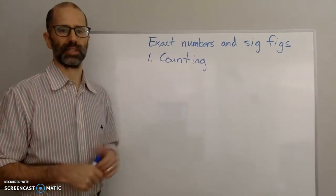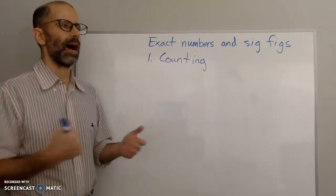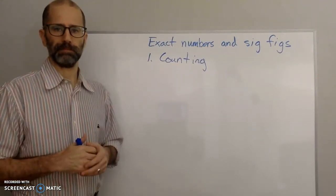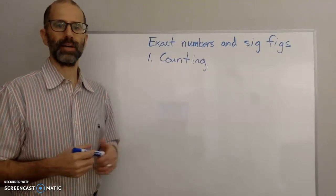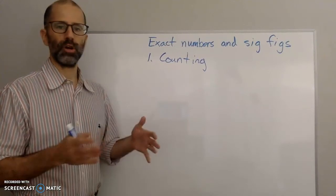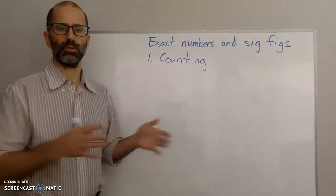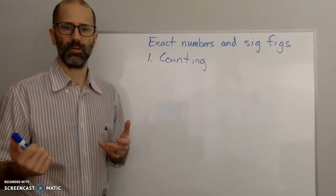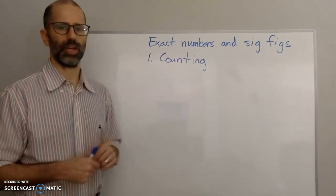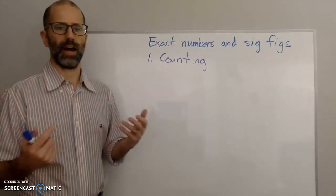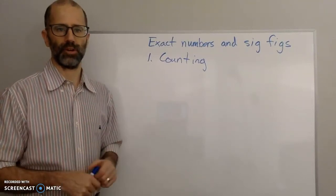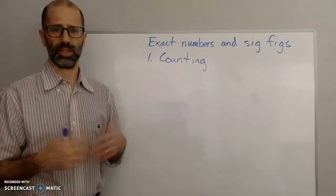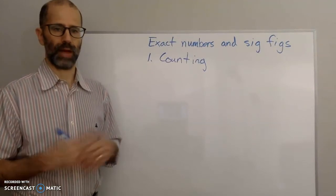Anytime it's counting, or in a problem — for example, if a certain enzyme can convert one substance into another at 50,000 per minute, and they ask you how many molecules can be converted in 35 minutes — the 35 minutes they give you is not a measured amount of time. It's a given, counted amount, so that would be an exact number.